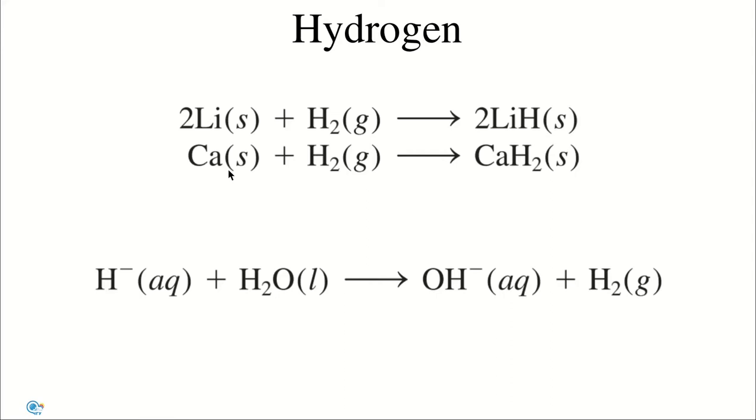The anion of these compounds is a hydride ion, H-, which is a very strong Brønsted base. It readily accepts a proton from proton donors such as water or acids. The product will be hydrogen gas.